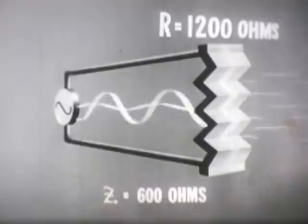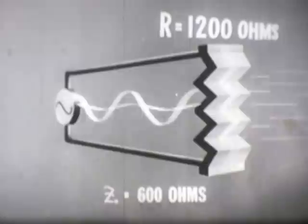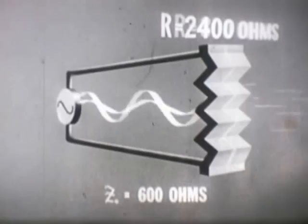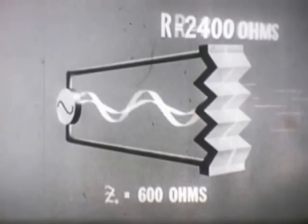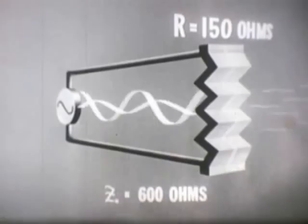Reflection always occurs whenever the resistance across the line is greater or smaller than the characteristic impedance of the line. The wave leaving the source of power is called the incident wave; the returning wave is called the reflected wave. The amplitude of reflected waves varies. When the resistance is not much greater than the characteristic impedance, the amplitude of the reflected wave is comparatively small. As the resistance is increased, the amplitude of the reflected wave increases. If the resistance is just a bit less than the characteristic impedance, the reflected wave will again be small, and as the resistance is further diminished, the wave again increases in size.